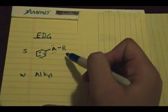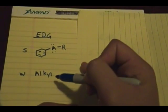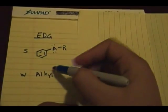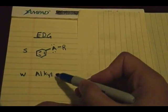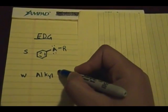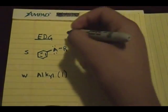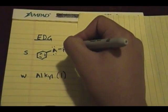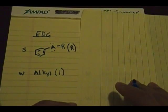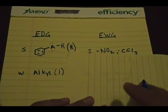The weak type of electron donating group is an alkyl group — methyl, propyl, isopropyl, stuff like that. These operate by the inductive effect. I use 'I' for inductive effect and 'R' in parentheses for resonance.